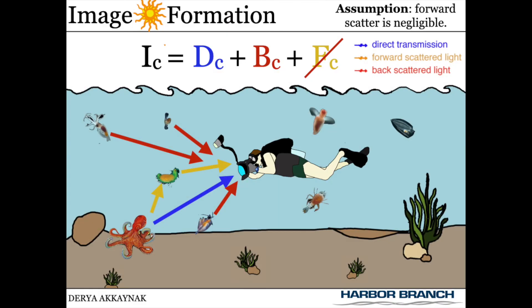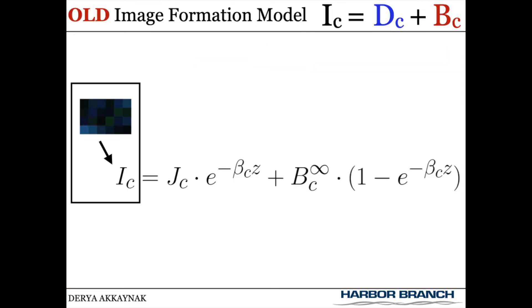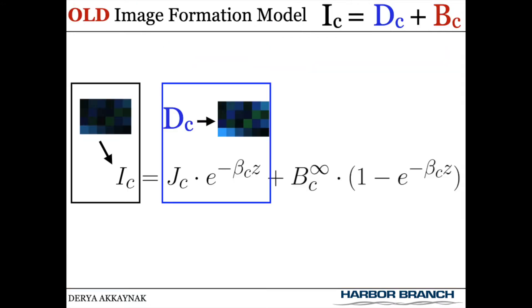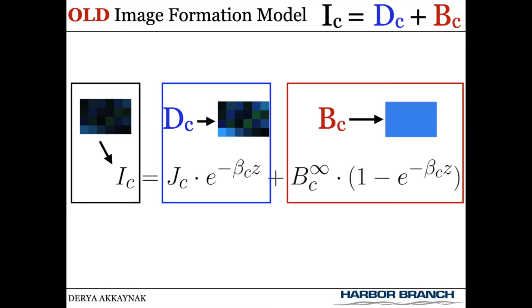Why does the revised image formation model make such a difference? Remember that an underwater image is the sum of the scene with attenuated colors — the direct signal — and the backscattered signal, which is fog due to scattering from particles. Here's the old image formation model and how the direct and backscattered signals look for a Macbeth color chart.